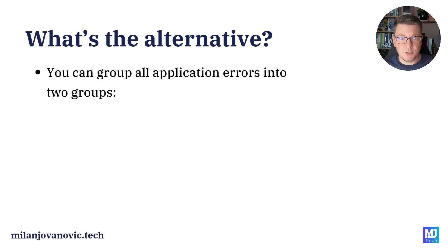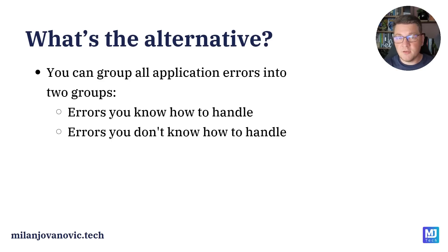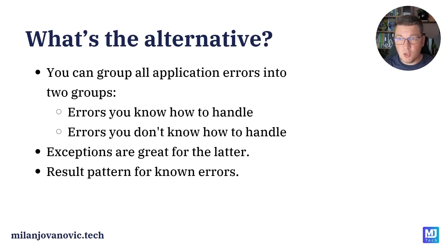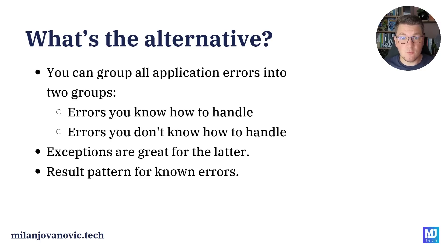You can group all application errors into two large groups: there are errors that you know how to handle, and then there are errors that you don't know how to handle. Exceptions are excellent for the latter case — when you run into errors that you don't know how to handle, because you don't know how to proceed with normal execution flow, you just create a new exception and throw that. However, in most cases we probably know how to handle a specific error, so it's appropriate to use something different, and a possible solution could be using the result pattern that could contain some sort of error code describing what went wrong.